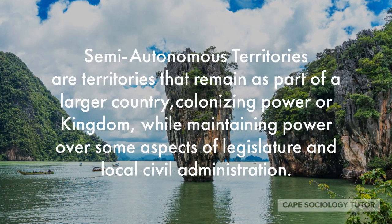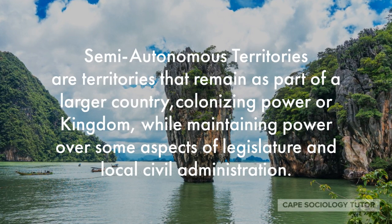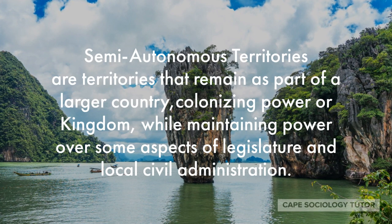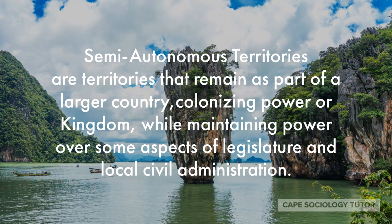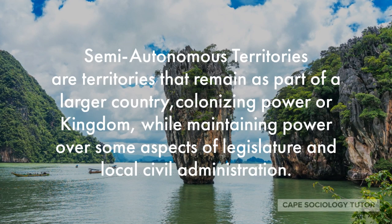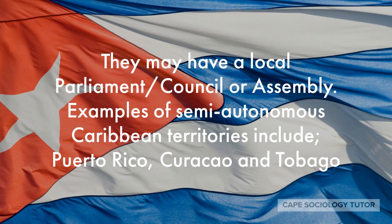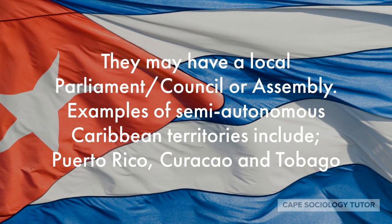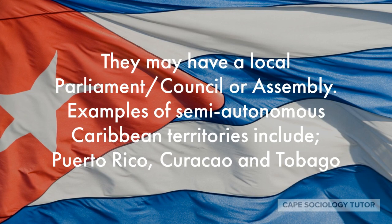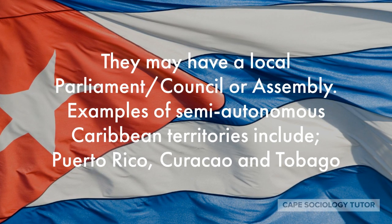Let's look at semi-autonomous territories. These are territories that remained part of a larger country, colonizing power, or kingdom, while maintaining control over some aspects of their legislature and their local civil administration. They may have a local parliament, council, or assembly. Examples of semi-autonomous Caribbean territories include Puerto Rico, Curaçao, and Tobago.